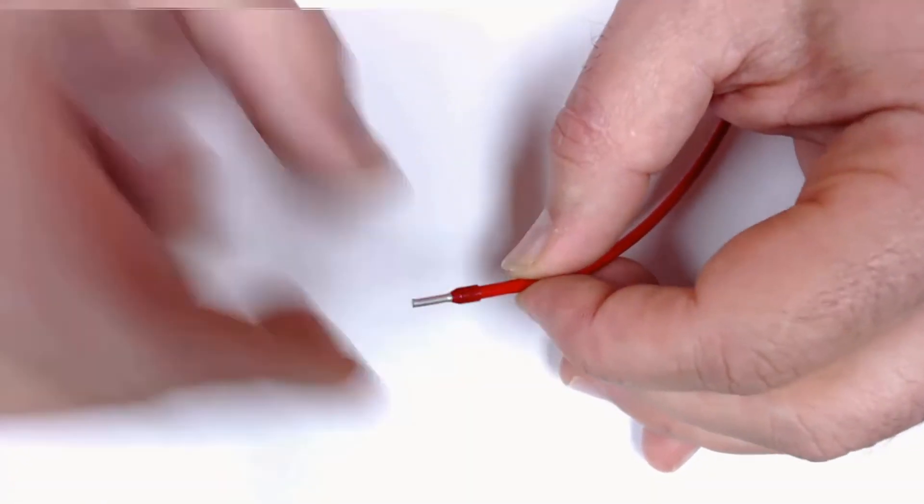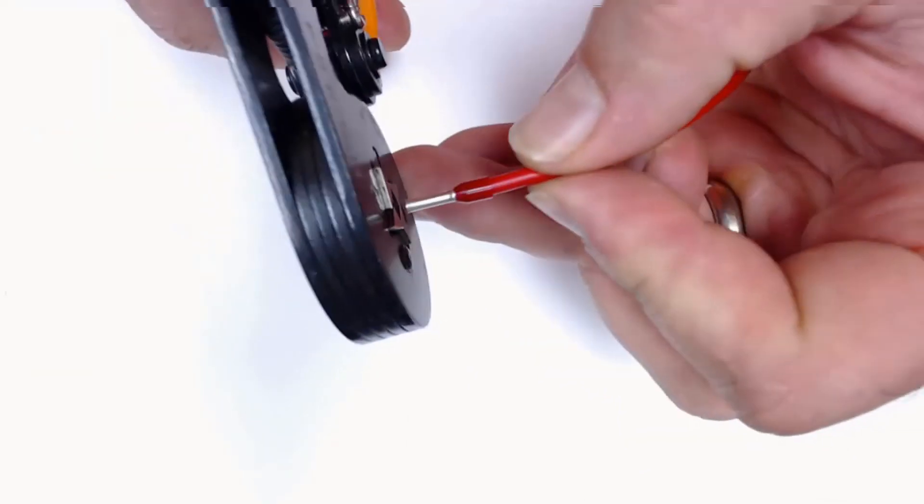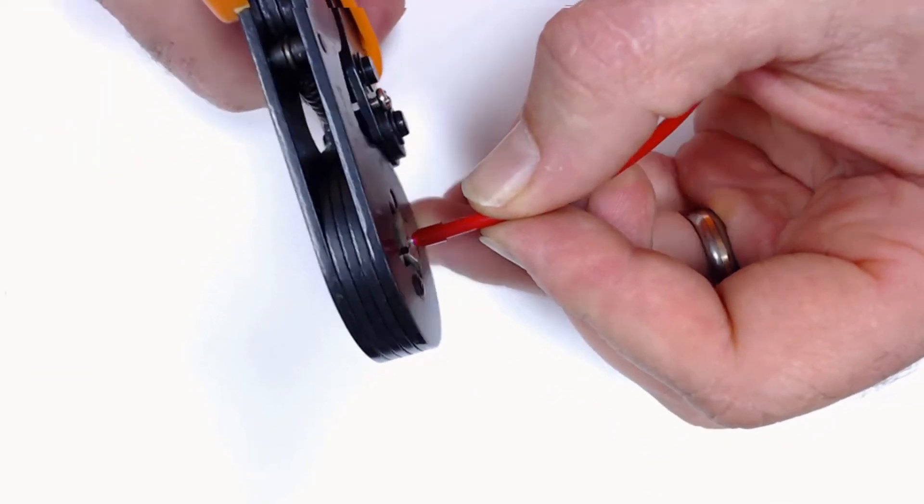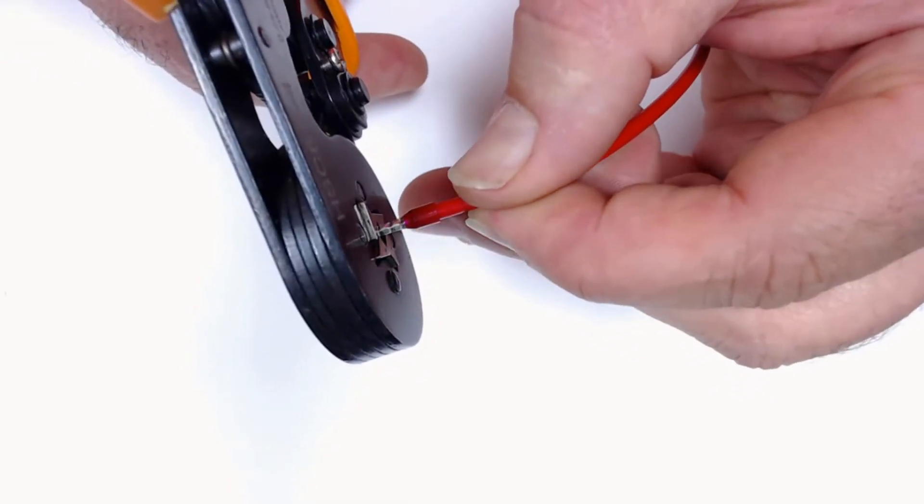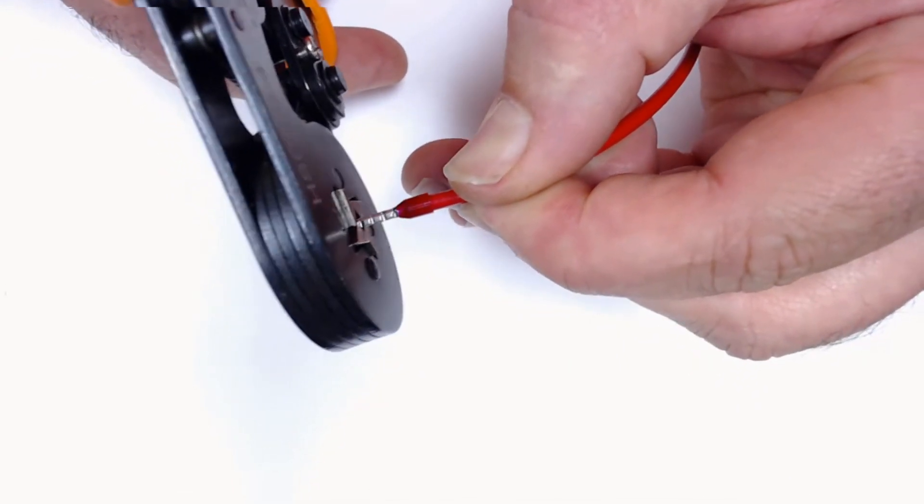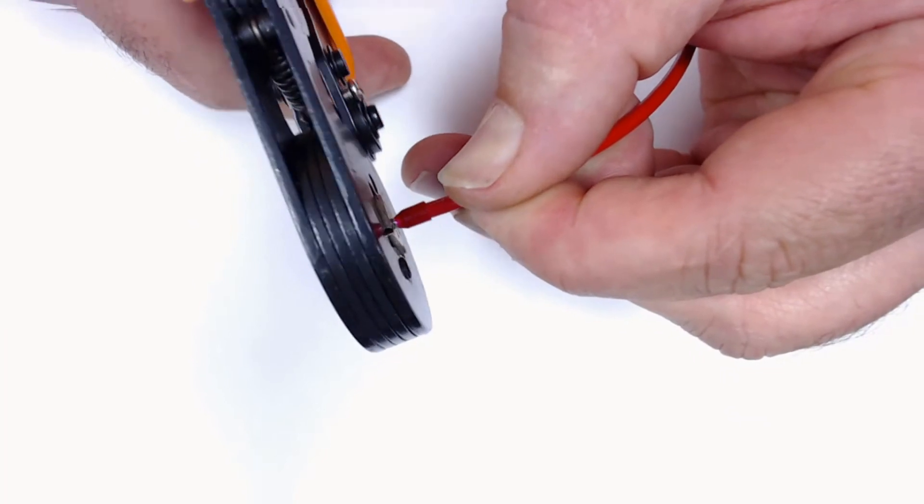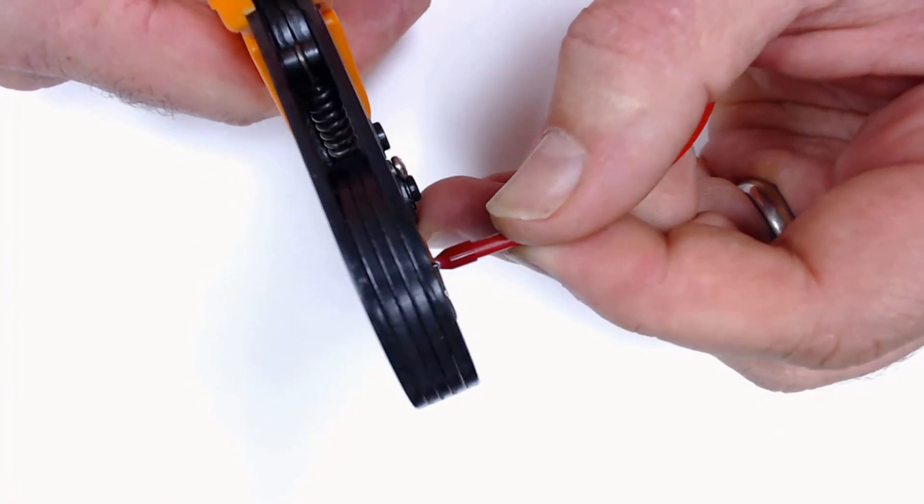Now that we've trimmed that, we're going to give it a good crimp. Same way we did with our other 18-gauge ferrule. Now the only difference is we're going to rotate this 90 degrees and crimp it again using the same crimper.